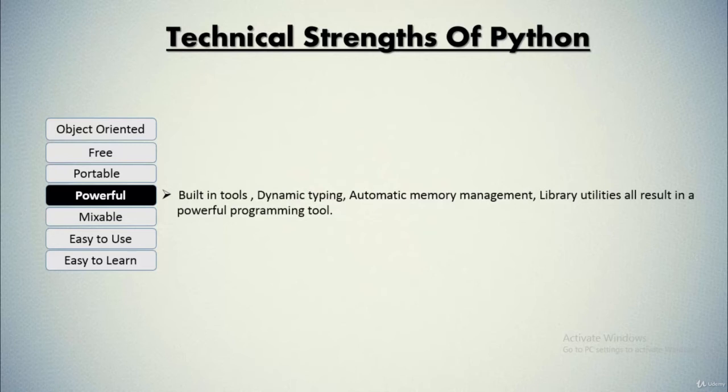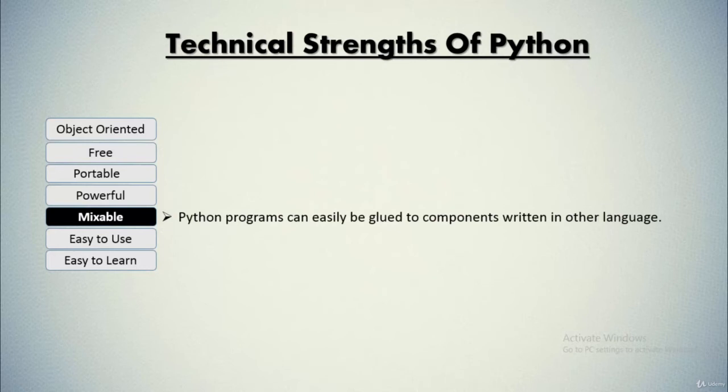It integrates well with existing IT infrastructure and is very platform independent. Among modern languages, its agility and productivity of Python-based solutions is legendary. It is mixable, meaning Python programs can easily be glued to components written in other languages. For example, Python's C API lets C programs call and be called by Python programs flexibly. You can add functionality to the Python system as needed and use Python programs within other environments or systems.